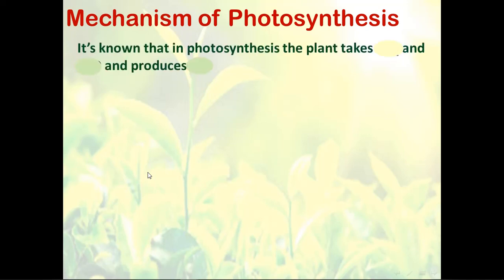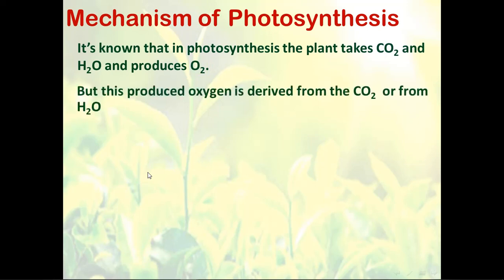It is known that photosynthesis takes place in the plant, in the green leaves of the plant, when the plant takes carbon dioxide and water and produces oxygen. But this produced oxygen — is it derived from the oxygen in the carbon dioxide, or the oxygen in the water? So today we are going to discuss what is the source of oxygen evolved during photosynthesis.